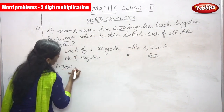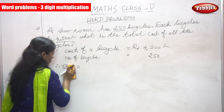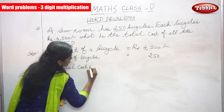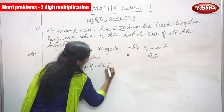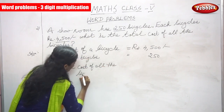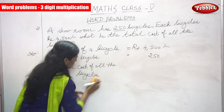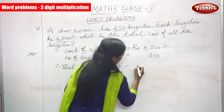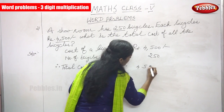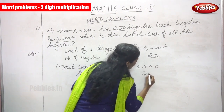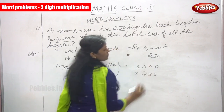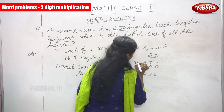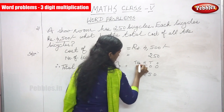Therefore, total cost of all the bicycles is equal to 4500 multiplied by 250. Before you multiply, you have to write the place value on the top of the number: ones, tens, hundreds, thousands, ten-thousands.